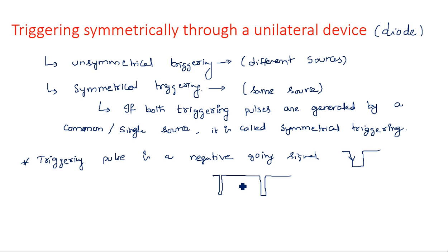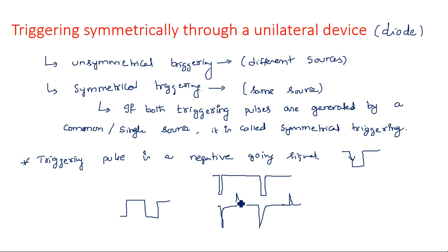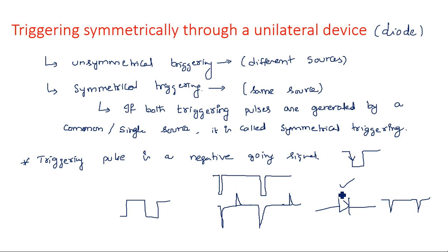This signal is often converted into very small time intervals — spikes — by passing through a high-pass RC circuit, which converts a rectangular, triangular, or square waveform into spikes. However, due to the positive peaks in the input signal, some positive spikes remain. Since only the negative peak is responsible for changing the state of the transistor, the positive peak must be eliminated by passing the signal through a unilateral device.